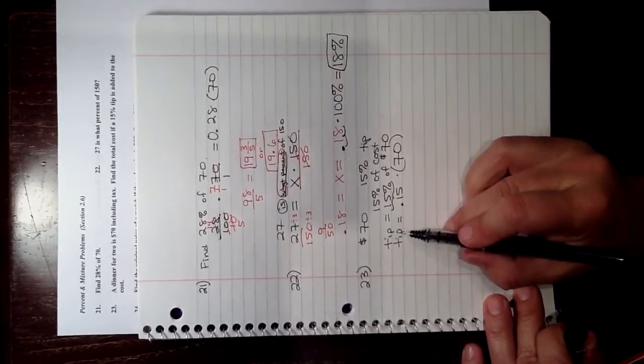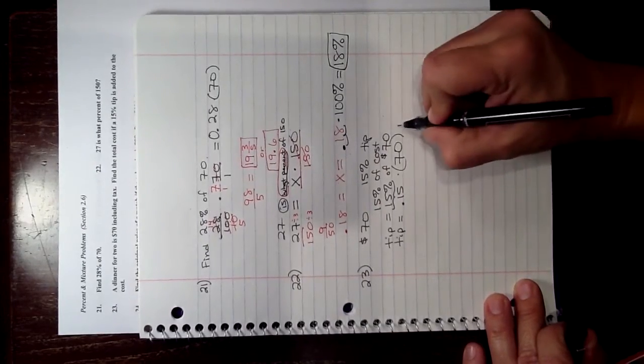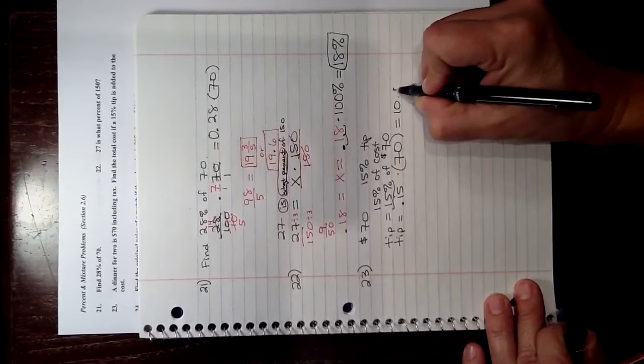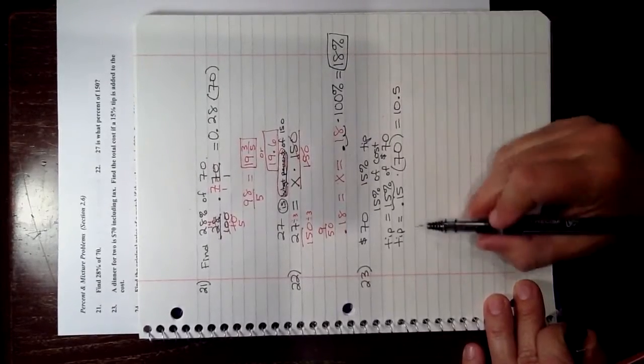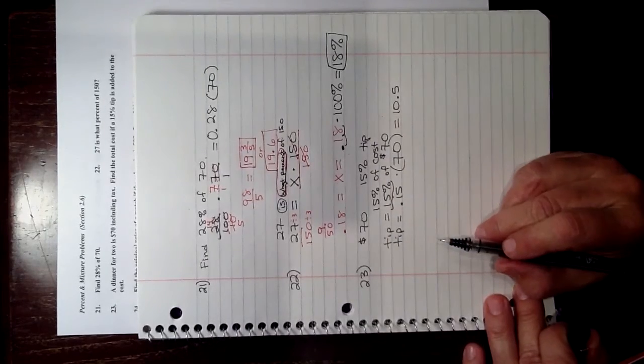And now you can use a calculator and go 0.15 times 70, and that's 10.5, and that's our tip. So if you have a $70 bill.